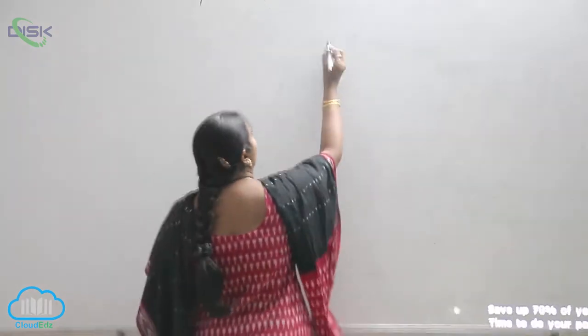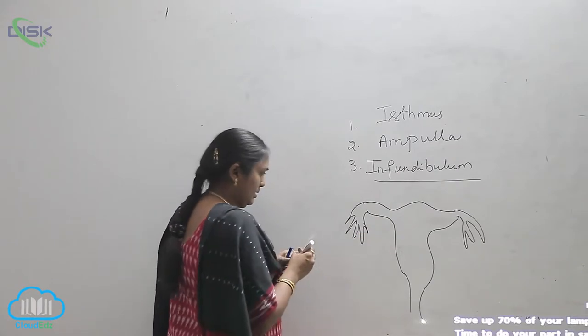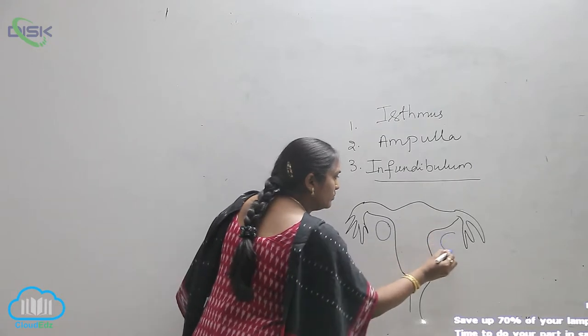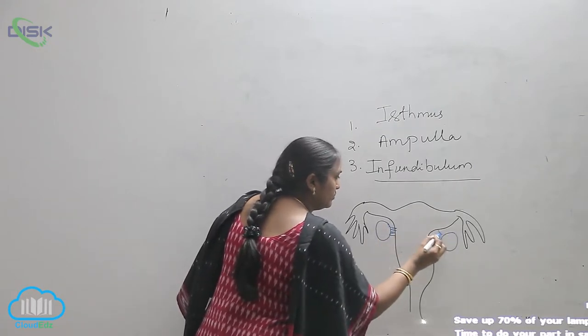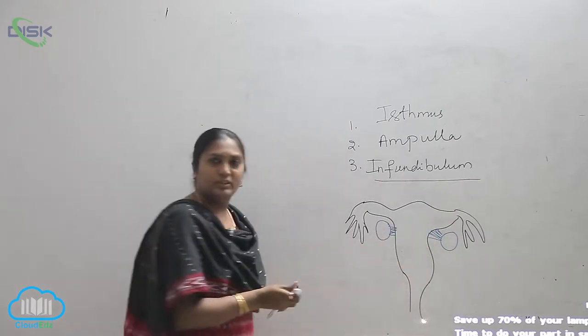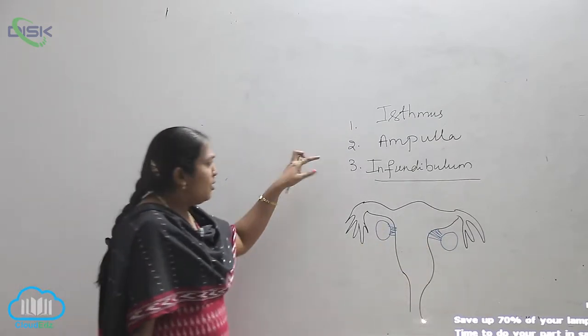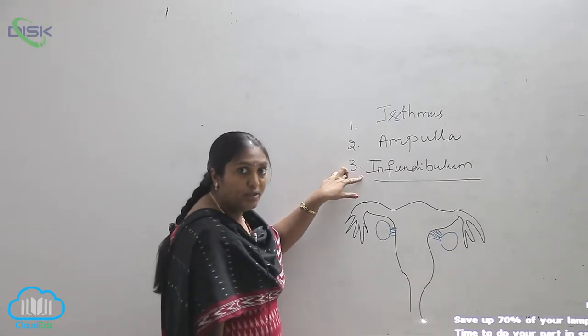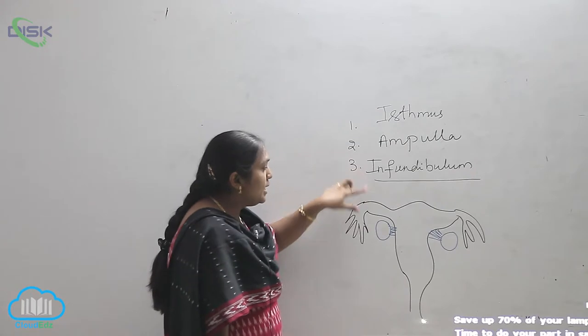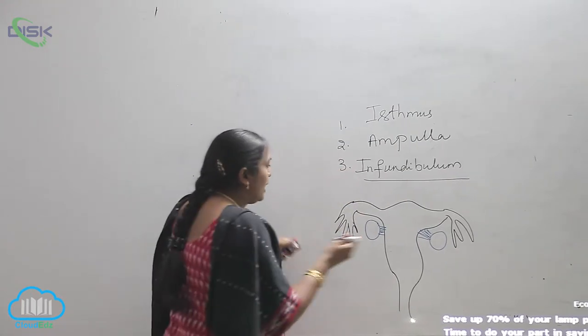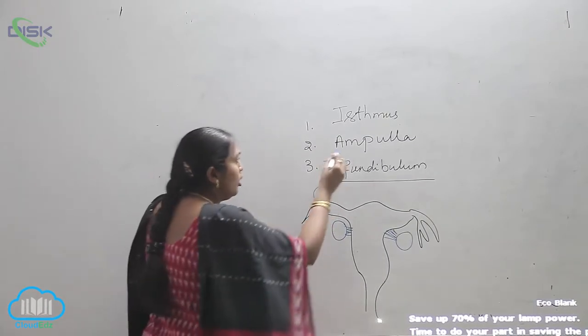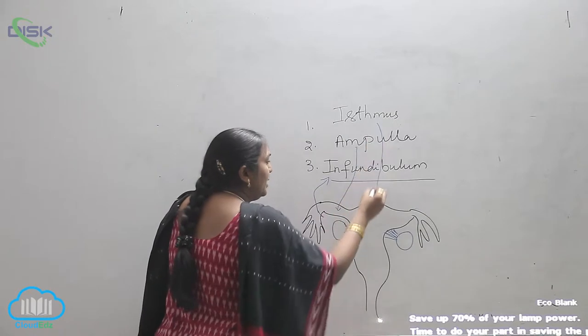Female reproductive system. When you see, as I told you, the portion of the fallopian tubule which is nearer to the egg we call as infundibulum. This layer we call it as the infundibulum, followed by the ampulla, and the middle one is the isthmus.